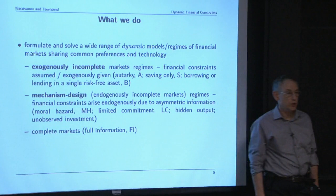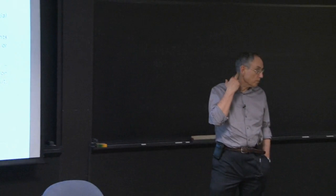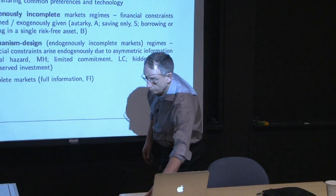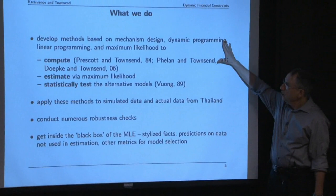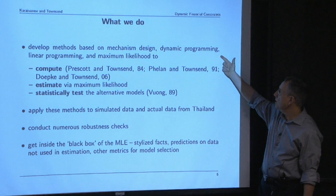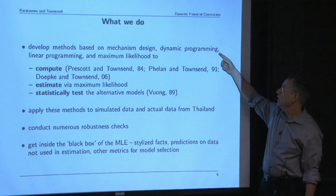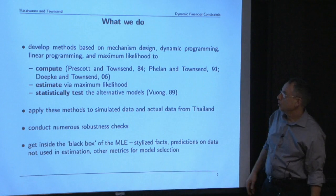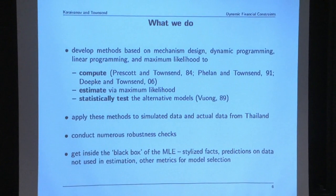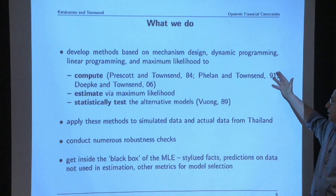We're going to go through tools that allow you to test one against the other pairwise for any pair, depending on what data you want to use. There's a mechanism design contract theory part we've been putting off until today. There is dynamic programming—value functions—which we've been seeing versions of. There's linear programming, and maximum likelihood. So we compute, we estimate, and we test.